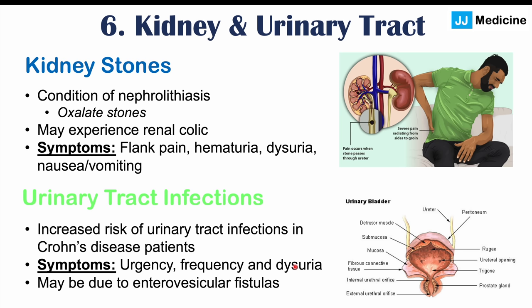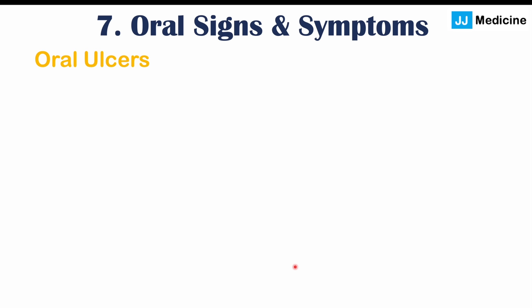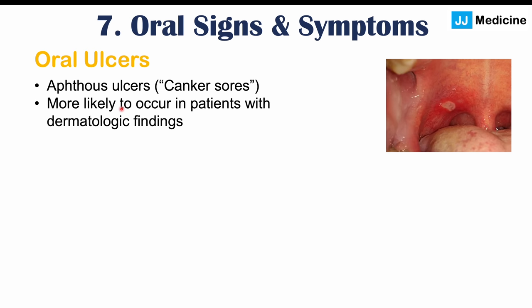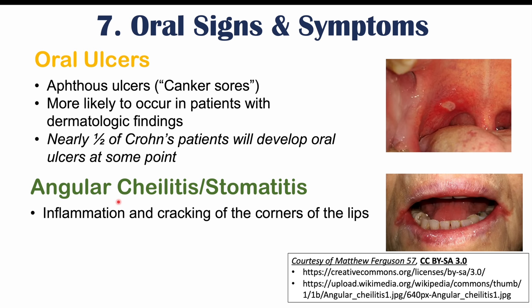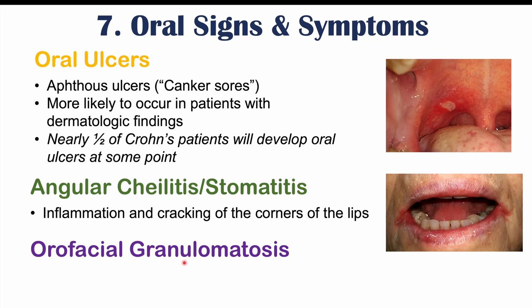Crohn's disease patients can also have oral cavity signs and symptoms. These include oral ulcers — specifically aphthous ulcers or canker sores — which are more likely in patients who also have dermatologic findings. Nearly 50% of Crohn's disease patients will develop oral ulcers at some point. Angular cheilitis, stomatitis, and orofacial granulomatosis — a condition involving swelling of the mouth and lips — can also occur.